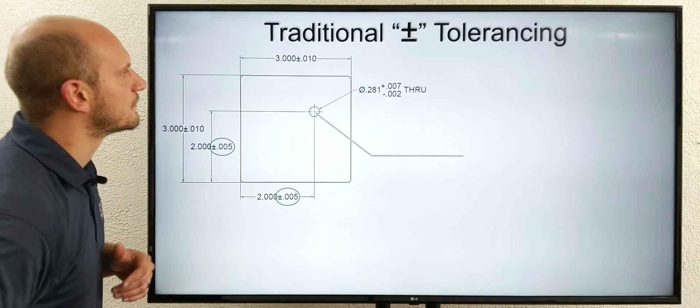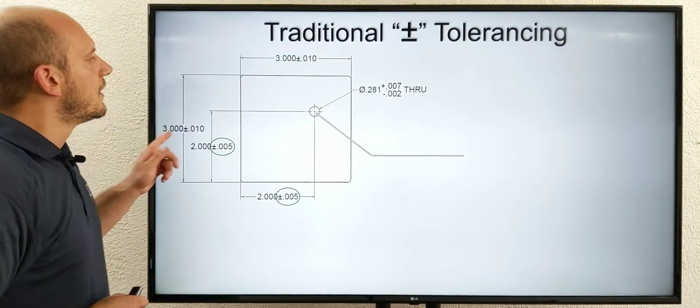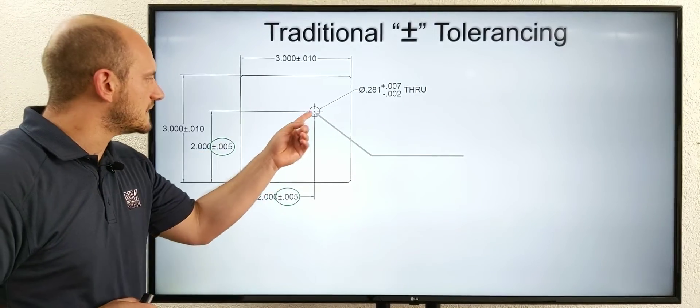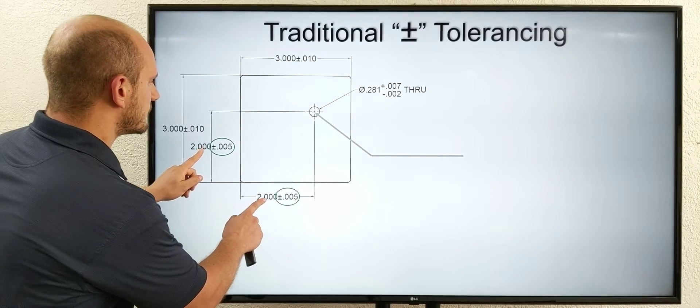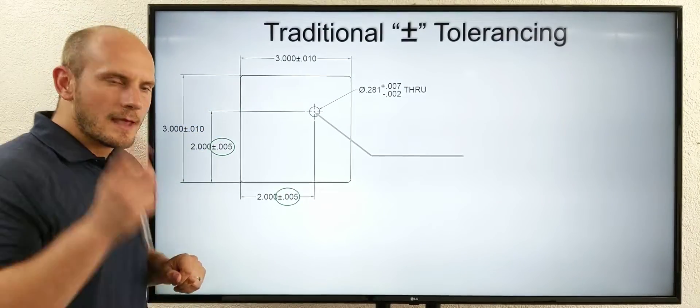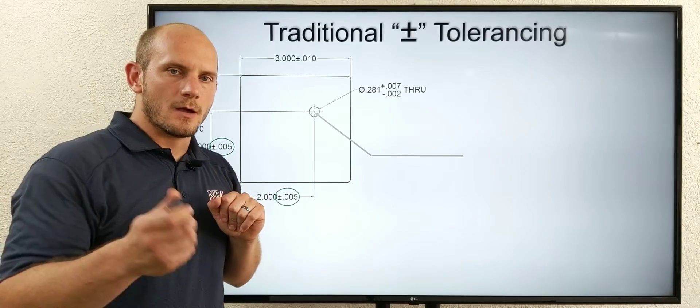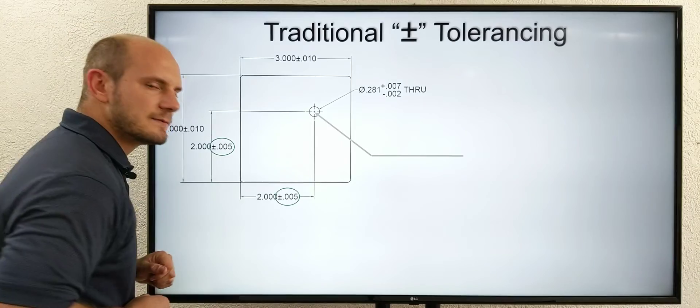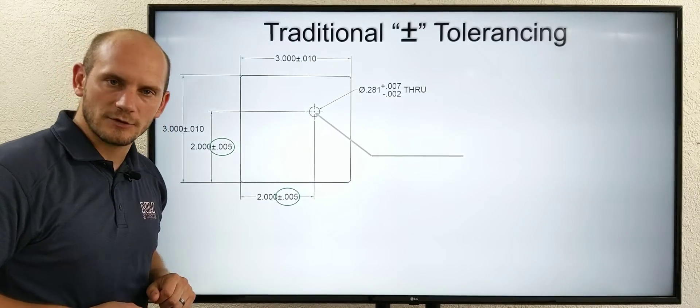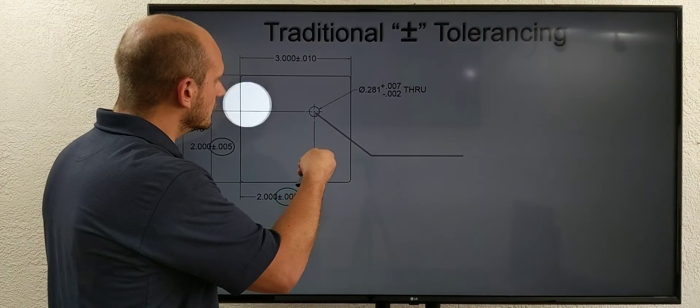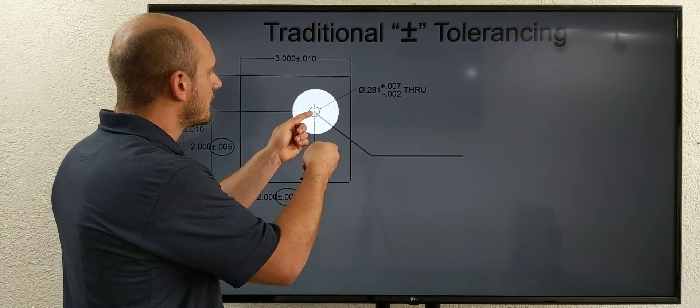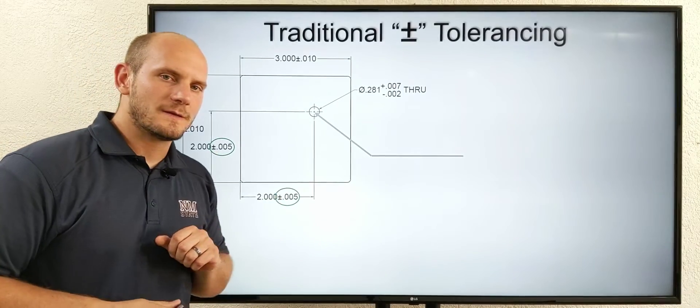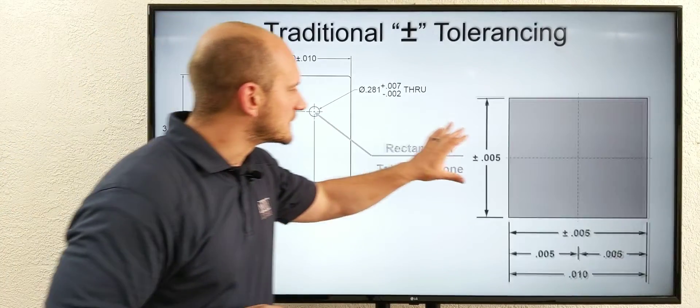Let's first look at the traditional plus or minus type of drawing. Here I've got a common drawing view of a simple part - a flat plate with a simple hole. I've got my location dimensions for that hole and my hole callout. If you notice on my location dimensions, I'm invoking this plus and minus five tolerance of location. If we zoom in and look at the shape and size of the tolerance zone we're invoking by using that traditional plus or minus five, it would look just like this.